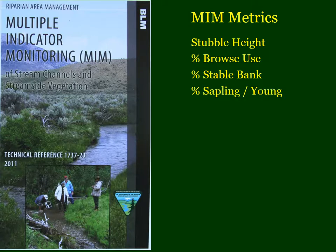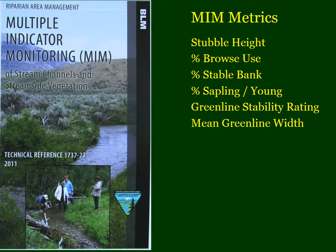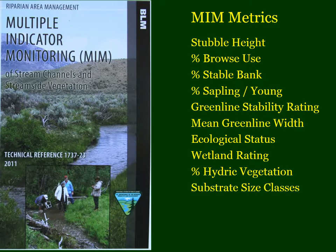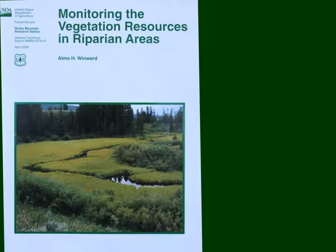Additional MIM metrics include the percentage of trees and shrubs which are in the sapling and young category, the green line stability rating, mean green line width, ecological status — which would mean early, mid, or late successional — the wetland rating, percent hydric vegetation, the size of the substrate which is the size of sand, gravel, and rock in the bottom of the channel, and the frequency and depth of pools.